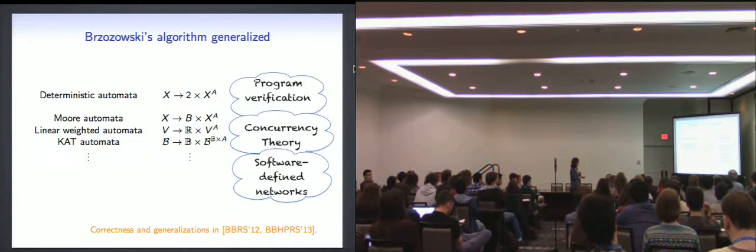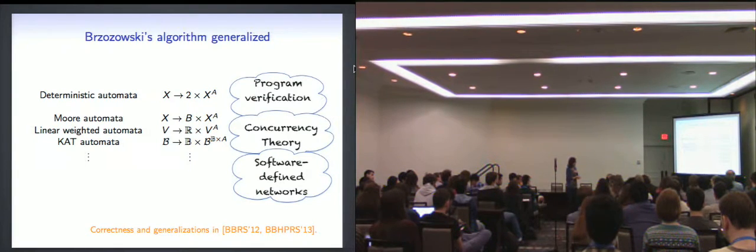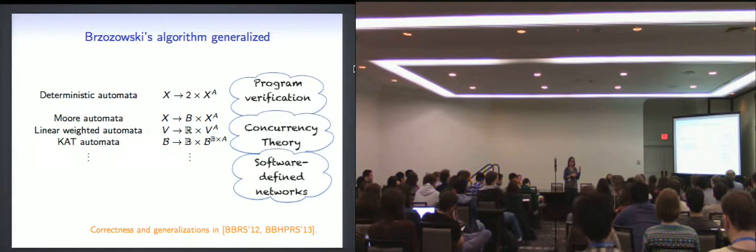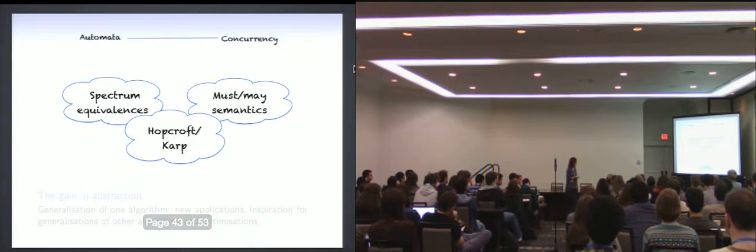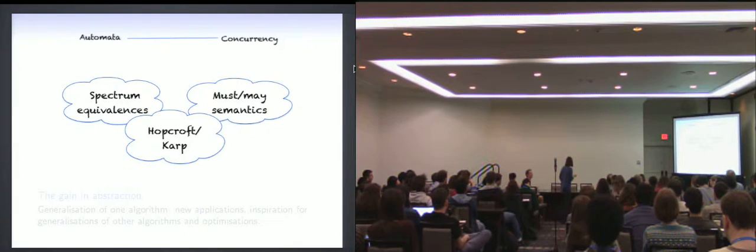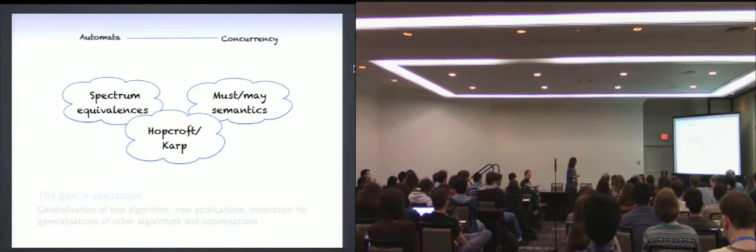And most, you know, most of the things you get are just for fun. But some of the generalizations actually can be used in practice. So for instance, the generalization to Moore automata and to Kleene algebra with test automata, we've used it in our work in NetKAT for software-defined networks. And in some work I did on must and may semantics in concurrency theory. Sometimes it's like this little step that gets you to more applications. How much time do I have, Ross?